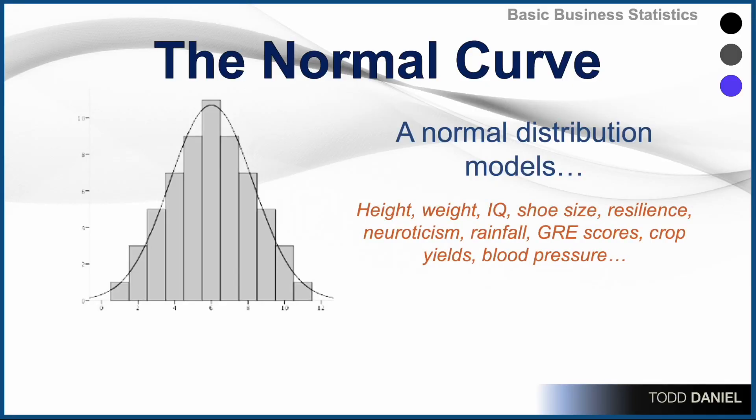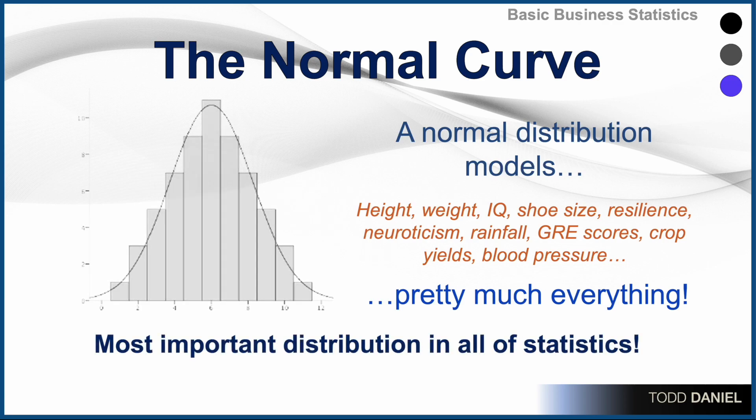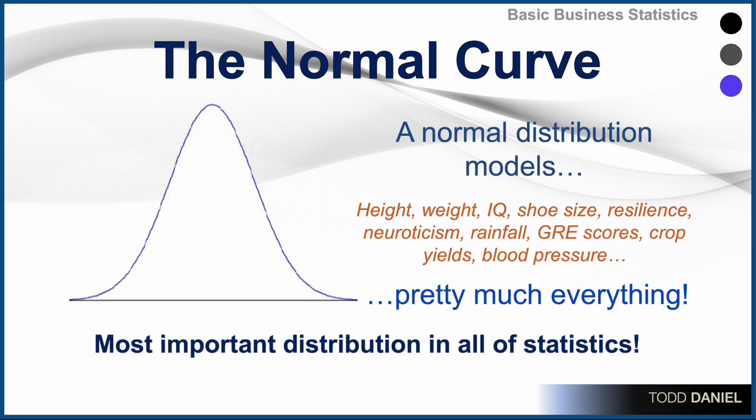Why is the normal curve so popular? Why is it the curve we are going to use the very most in this class? It is because a normal distribution models pretty much everything: height, weight, IQ, shoe size, resilience, neuroticism, rainfall, GRE scores, crop yields, blood pressure — pretty much everything. Most human measures can be modeled with a normal curve.